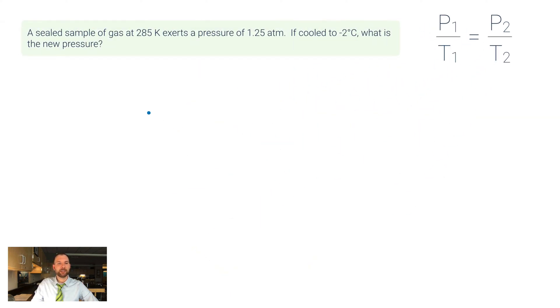So let's try an example problem. This says a sealed sample of gas at 285 Kelvin exerts a pressure of 1.25 atmospheres. If cooled to negative 2 degrees Celsius—oh, you got to notice this, degrees Celsius, we've got to get that into Kelvin—so I would add 273 to this and that results in a Kelvin temperature of 271. What is the new pressure?